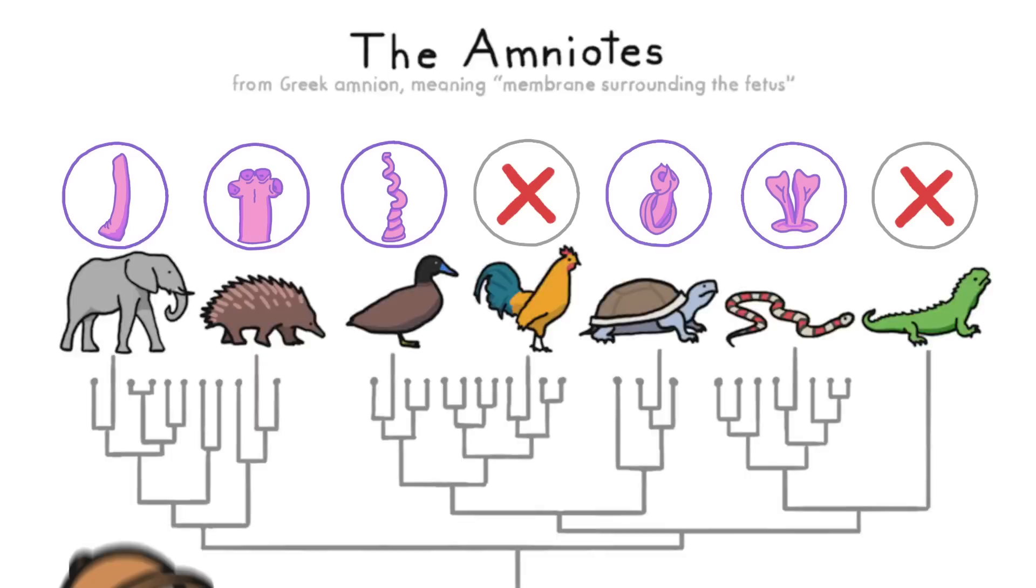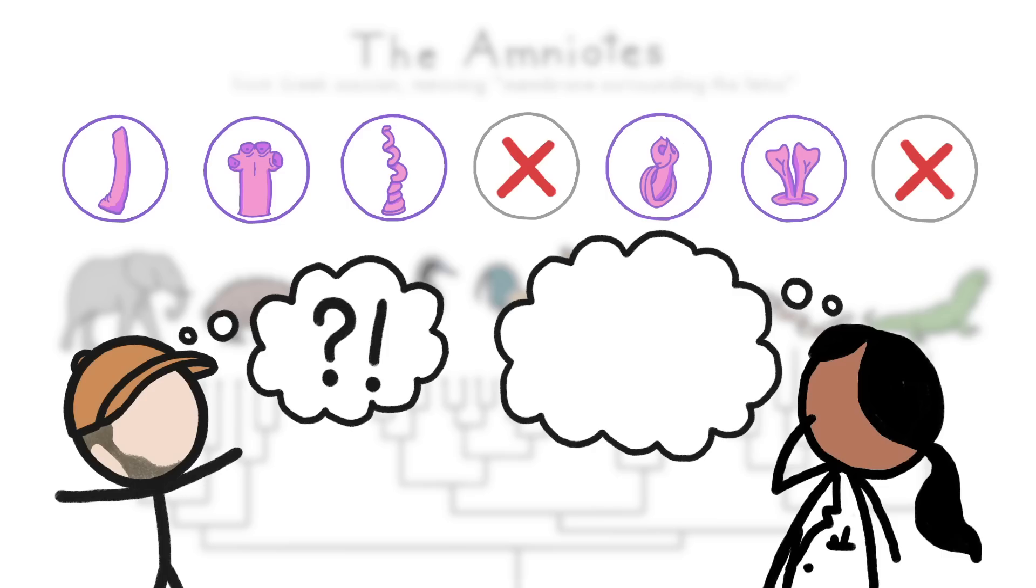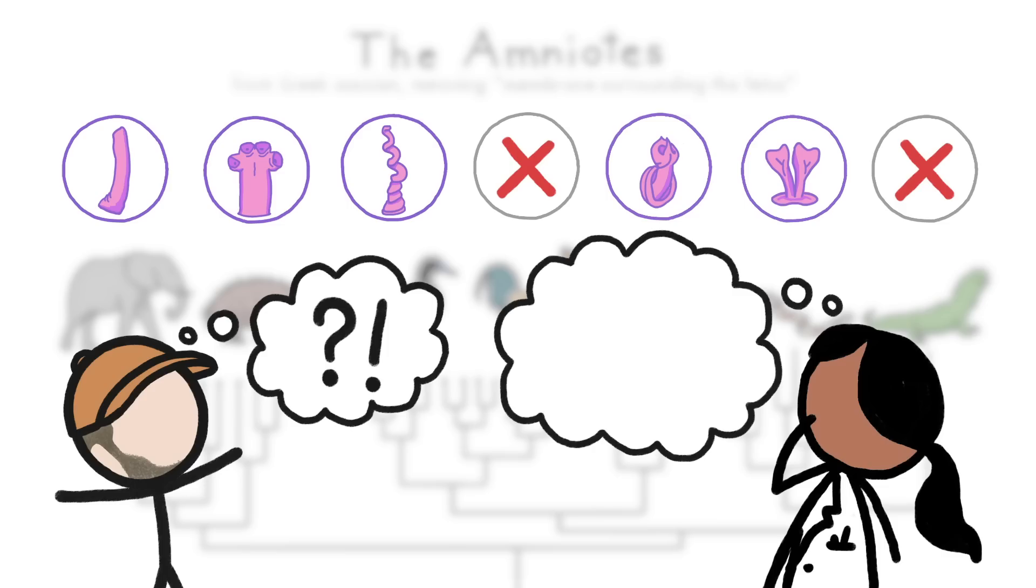This incredible diversity, combined with the fact that many other amniotes don't have any penises at all, raises a big question. Okay, you probably have several questions, but to evolutionary biologists, the most pressing question is, did the amniote penis arise multiple times, or did it arise just once?